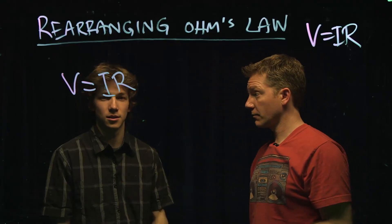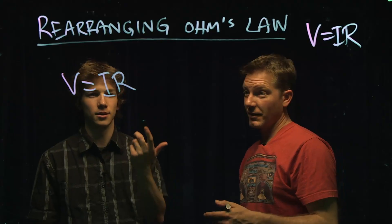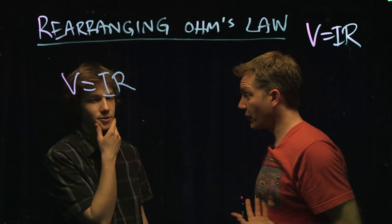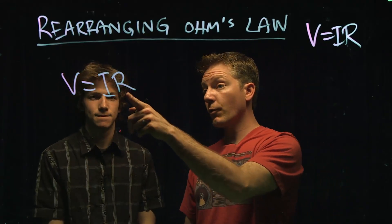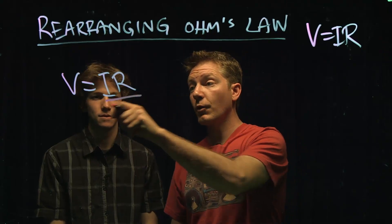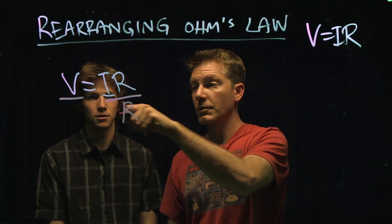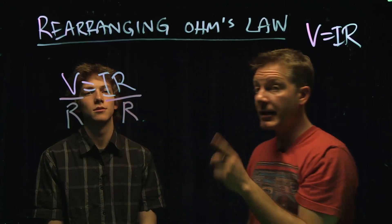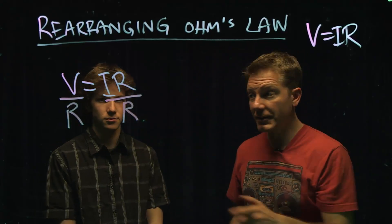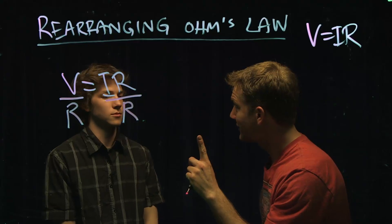Go. It's not going to do it by itself, it needs our help. So the way we do it is if we want to get R out of there, we divide both sides by R. Because anything divided by itself is 1.